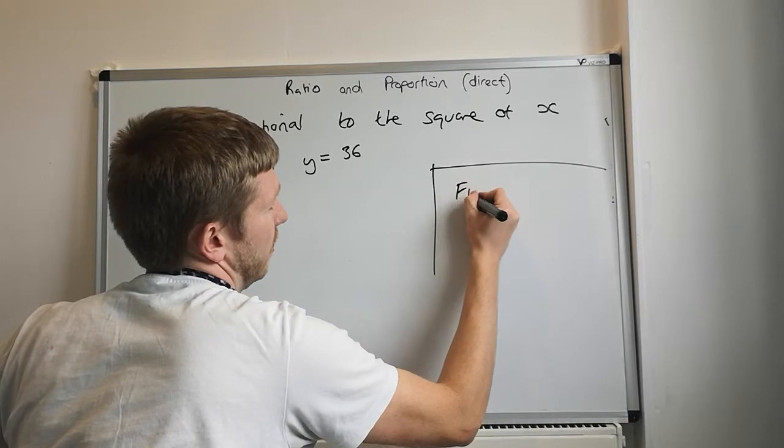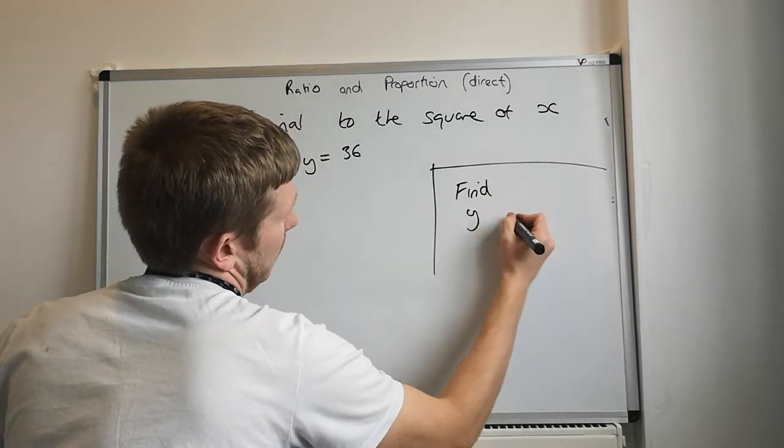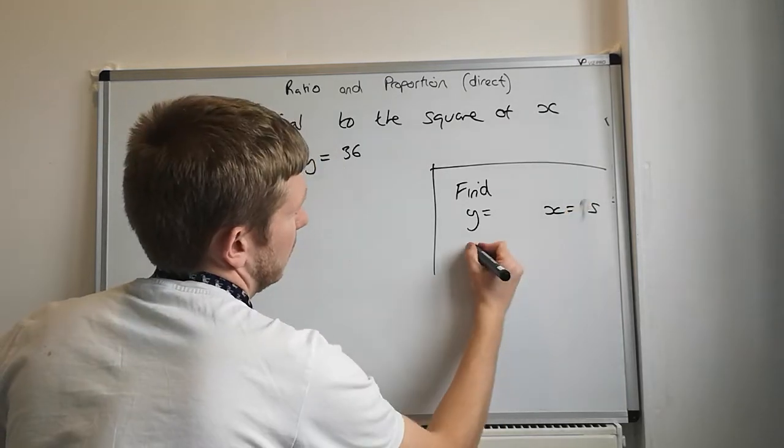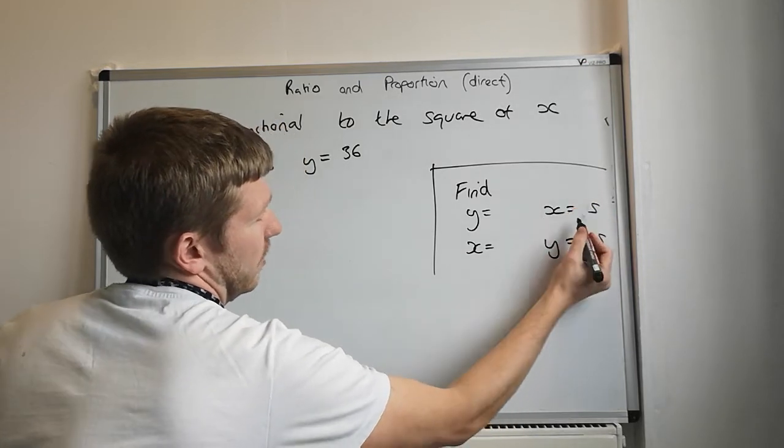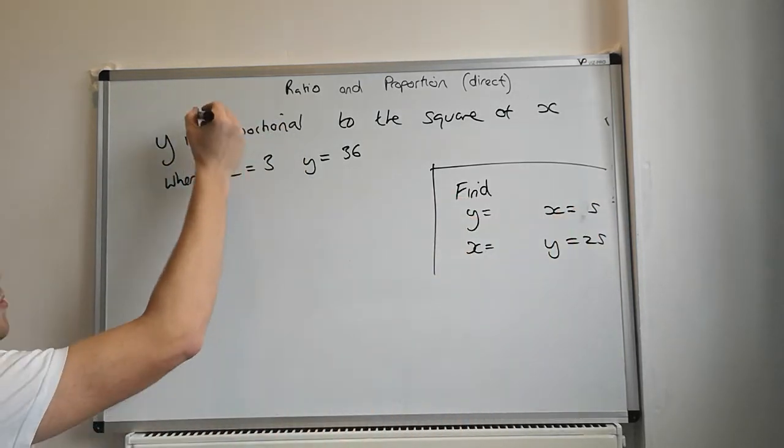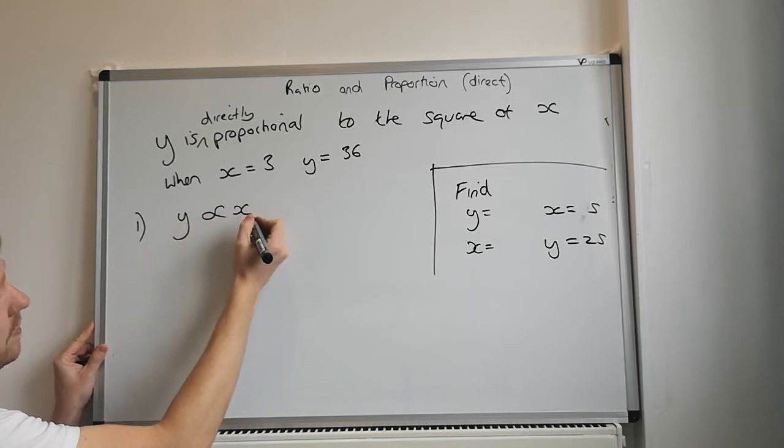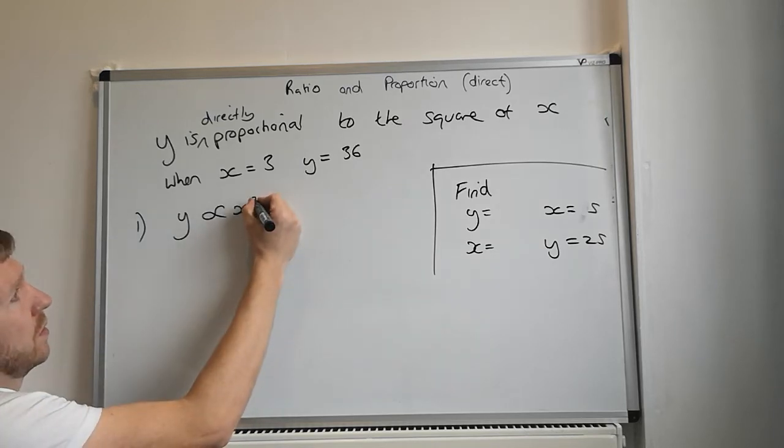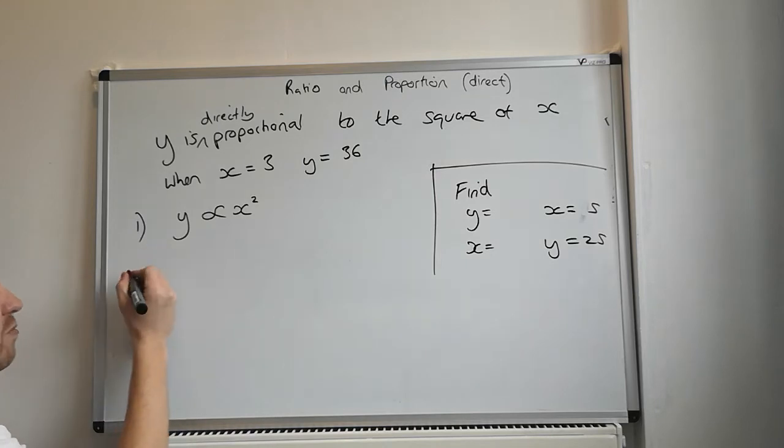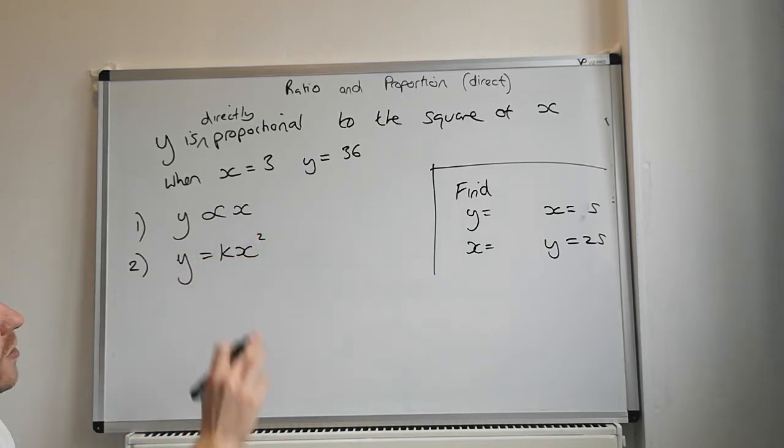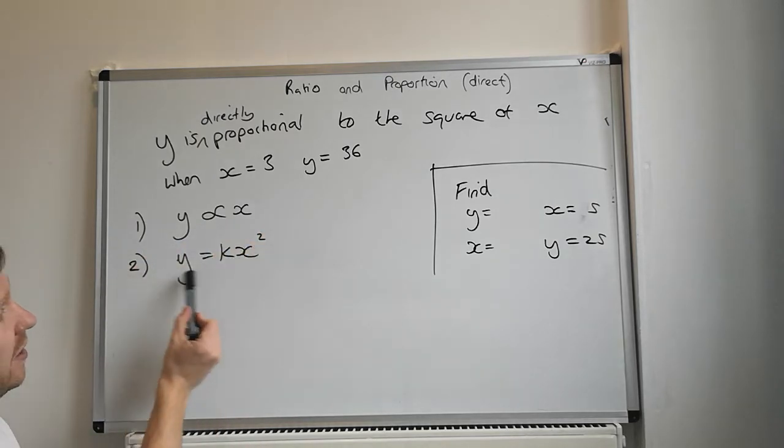Again, the question is find y when x equals 5 and then the other one is find x when y equals 25. So step one, Y is proportional to the square of x. Now because it's a square of x, it might be worth you just putting the x squared on that, square of x. But the really important bit is to write this line. Because that just means proportional to, you don't really need the x squared on there. But this is important, this is your first time where you get marks in your exam. So y is equal to k x squared, always k because x squared is a slot.